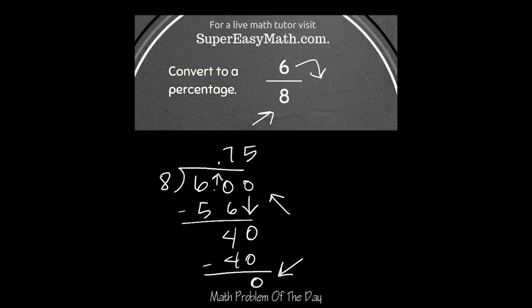So the decimal form is 0.75, and to get a percent after you have a decimal, it's just a hop, skip, and jump away because you just move the decimal space over two times to the right and you add a percentage sign.